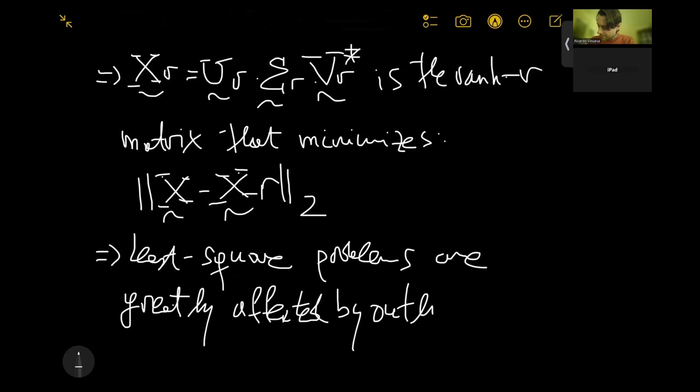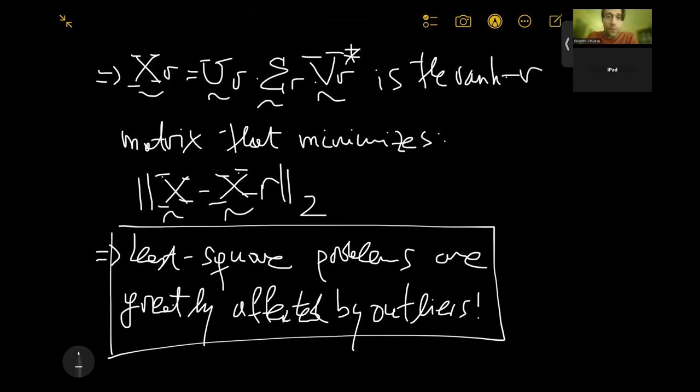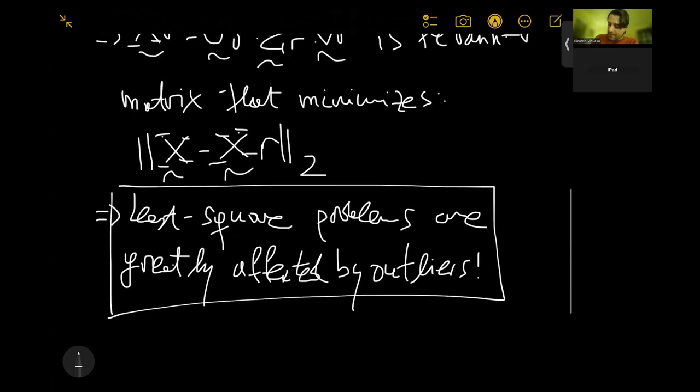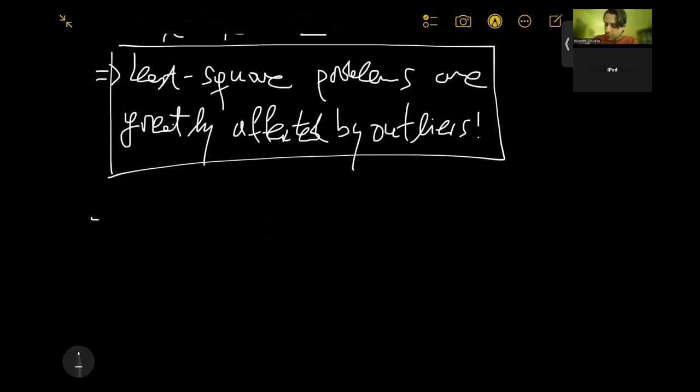And this is known. That's why we have been talking about regularization for quite some time in several of our videos. But at the end, the SVD is a least square problem. Now, what is the idea behind the robust principal component analysis?